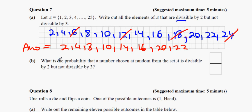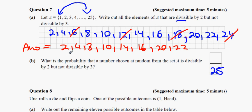What is the probability that a number chosen at random from set A is divisible by 2 but not by 3? The set A has 25 numbers in total. We found 8 numbers that satisfy the condition. So the probability is 8 out of 25.